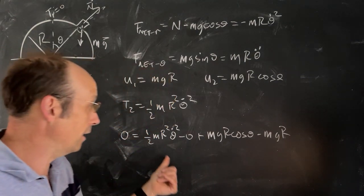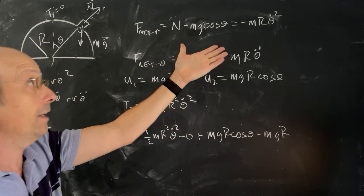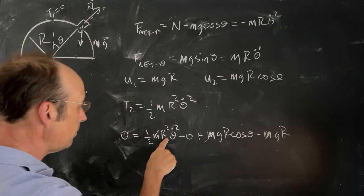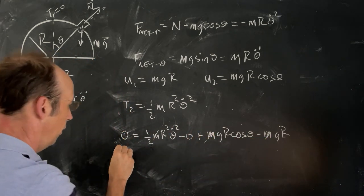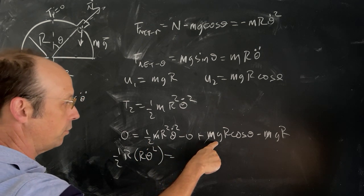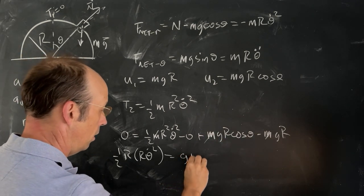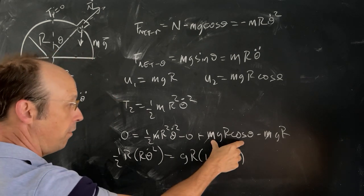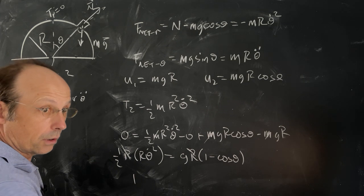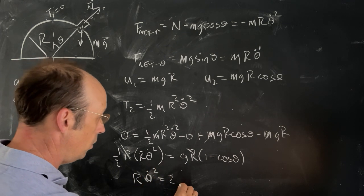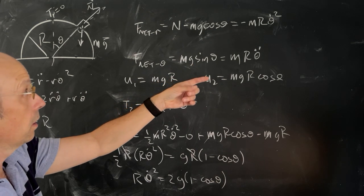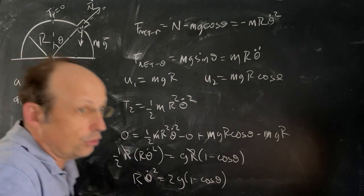Putting it all together: zero equals one-half M R squared theta dot squared minus zero, plus M G R cosine theta minus M G R. I can use this to get an expression for theta dot squared — actually I need R theta dot squared. Mass cancels in all terms. Moving things to the other side: one-half R times R theta dot squared equals G R times one minus cosine theta. R cancels, multiply by two: R theta dot squared equals two G times one minus cosine theta.